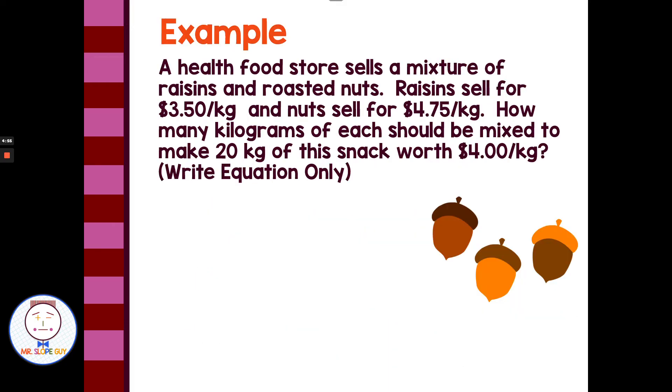All right, let's look at a new example. A health food store sells a mixture of raisins and roasted nuts. Raisins sell for $3.50 a kilogram and nuts sell for $4.75 per kilogram. How many kilograms of each should be mixed to make 20 kilograms of the snack worth $4 a kilogram? Let's start with defining our two variables. We have raisins, we use R for raisins and N for nuts. Then the first equation I'm looking for is the counting equation. We have that the mix is 20 kilograms. So we know we're taking some amount of raisins, some amount of nuts, and they're adding up to exactly 20 kilograms. So we can come up with R plus N is 20.